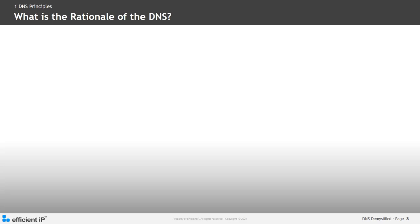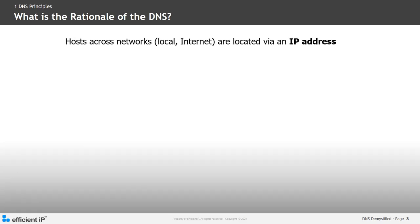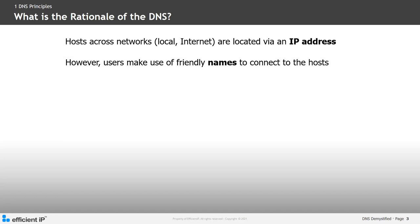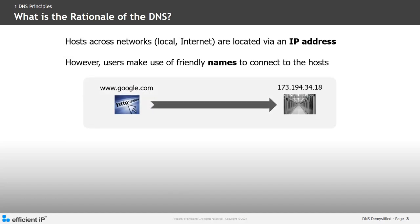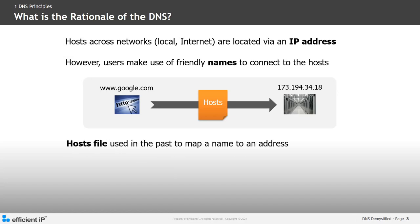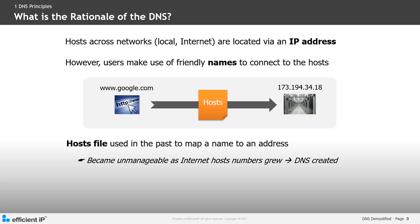What is the rationale of the domain name system or DNS? Hosts across local networks or the internet communicate and are reachable via an IP address. However, users make use of friendly names to connect to the host. For example, when you need to search for something on the network, you may type in www.google.com into your browser. DNS is responsible for translating that friendly name to an IP address. In the past, the host files located on an operating system were used for this translation, but this is not practical today due to the number of hosts on the network. Therefore, DNS provides a standard naming convention for locating IP-based hosts.